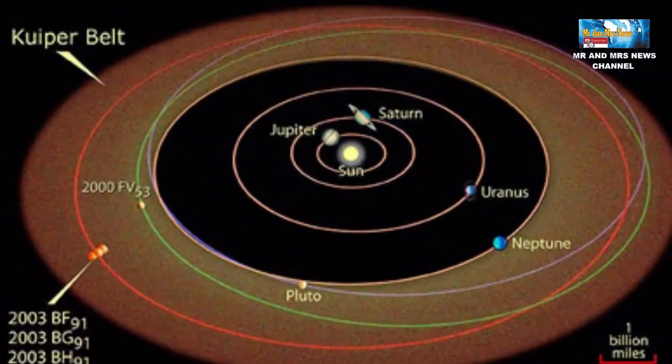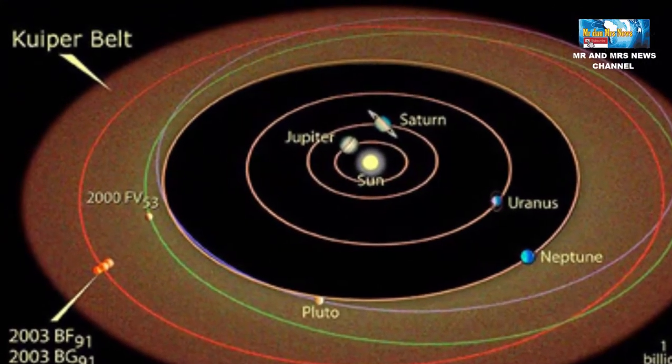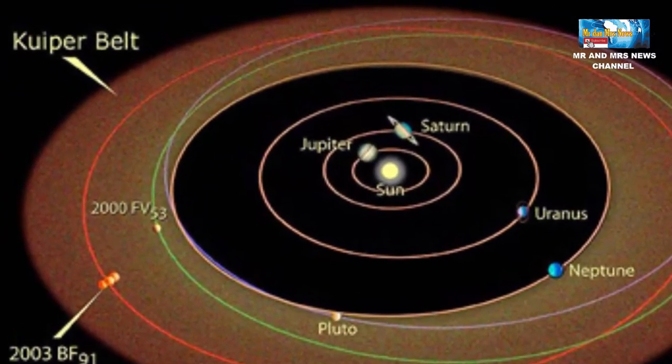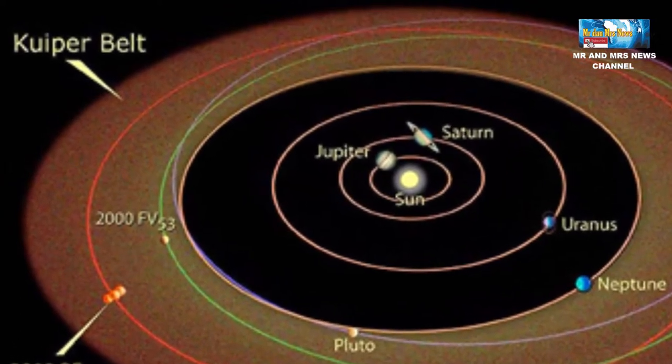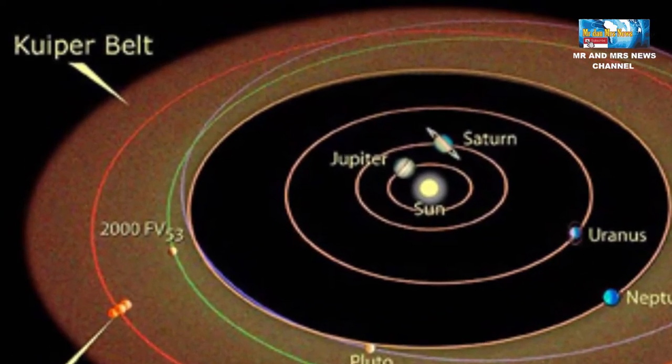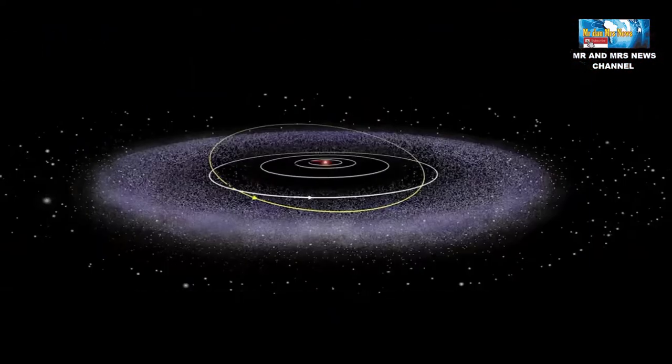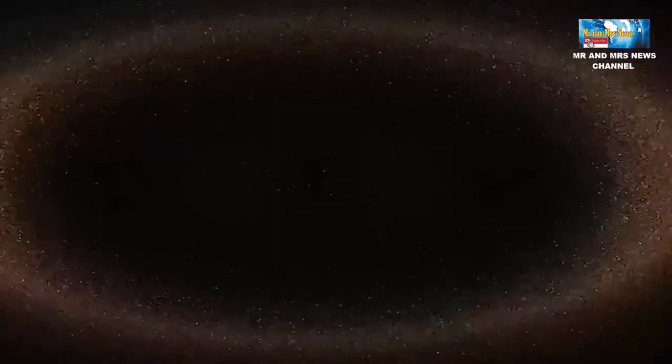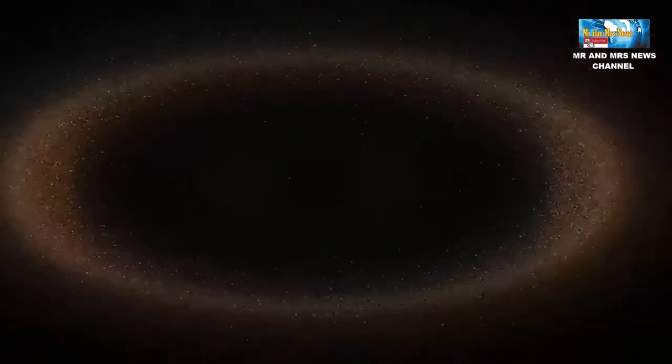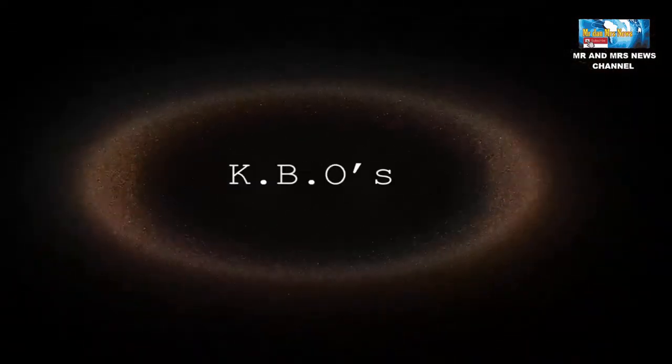Karena letak Sabuk Kuiper yang jauh dari matahari serta planet besar, maka objek Sabuk Kuiper dianggap tidak terpengaruh dengan proses yang sudah membentuk serta mengubah objek tata surya lain. Dengan begitu, menentukan komposisinya akan memberikan informasi penting mengenai susunan tata surya yang paling awal.